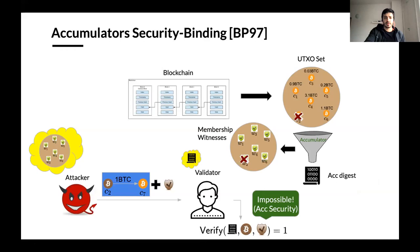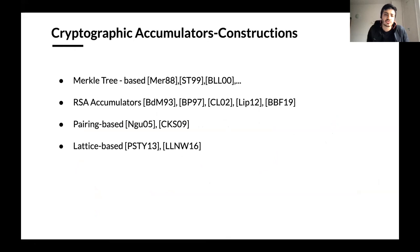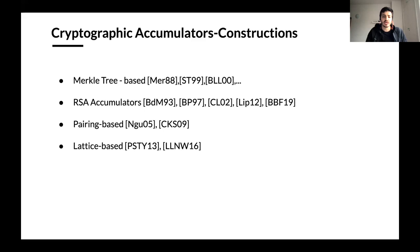Nobody should be able to create false membership witnesses for elements not in the set — this should be impossible. There are nice constructions in the literature for accumulators, which is a well-studied object in cryptography. We have constructions based on Merkle trees, RSA accumulators working over RSA or hidden-order groups, accumulators from pairings, and accumulators from lattices. The RSA-based accumulators are the ones we use in this talk.